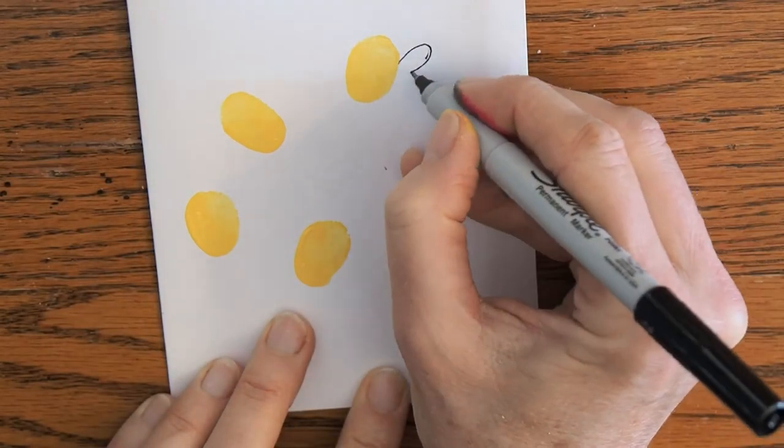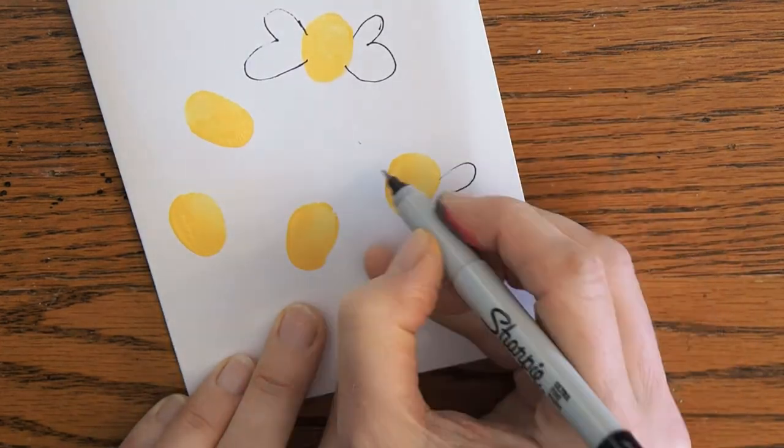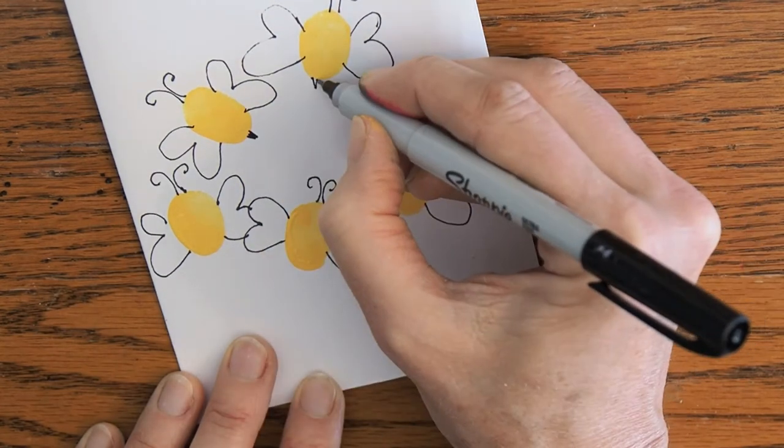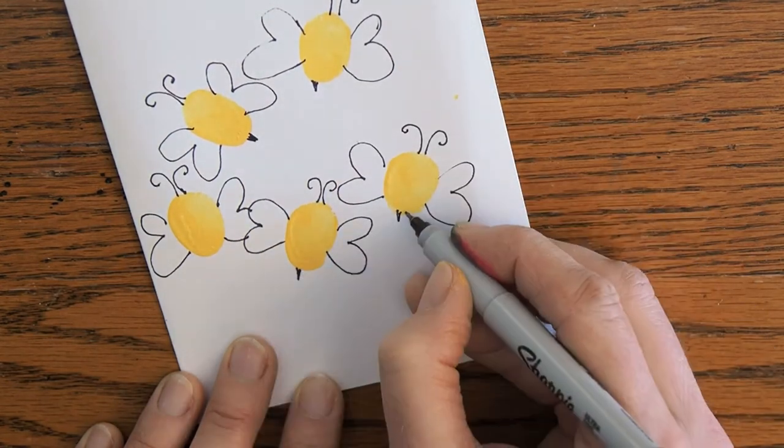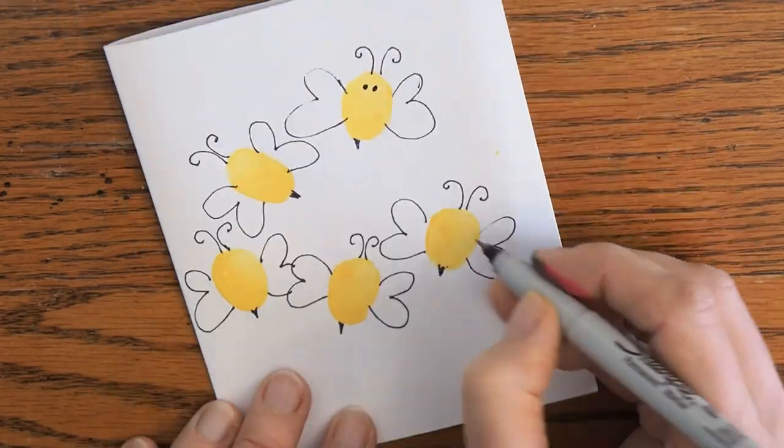We just put on wings and then we finish up our wings. And they of course need little antennas on our bumblebees. Little stingers we're going to put on there. And then they need to be happy bumblebees. So we're going to put little eyes and little mouths.